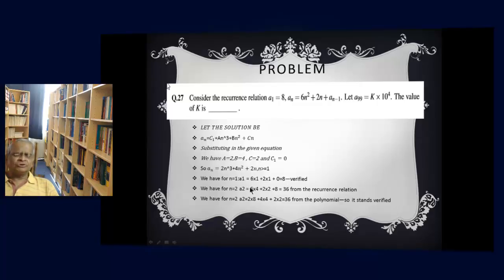For n equals 2, let us see. The recurrence relation becomes 6 into 4, 2 into 2 plus 8, that is 36. And from the polynomial we get 2 into 8, 4 into 4 plus 2 into 2, this plus this plus this, 36 from the polynomial. So it stands verified, the polynomial is indeed correct.